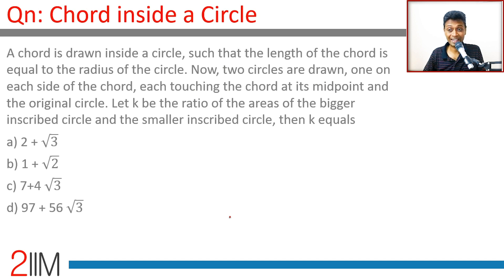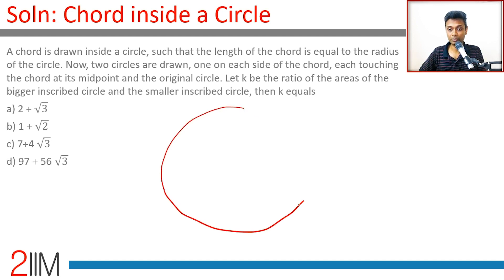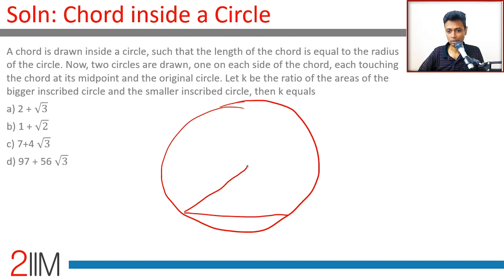A chord is drawn inside a circle such that the length of the chord is equal to the radius of the circle. Two circles are drawn, one on each side of the chord. Let me draw a big circle with some radius, and draw the chord equal to the radius. If the chord AB equals the radius, then triangle OAB is an equilateral triangle.